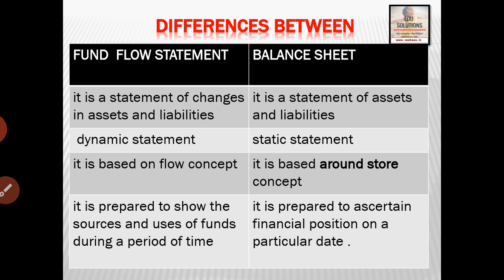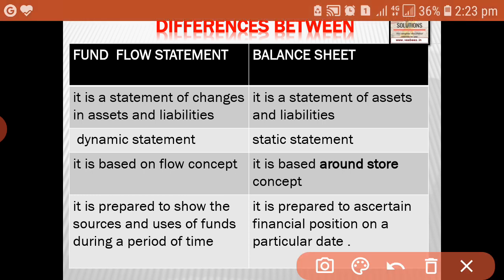Fund flow statement is a statement of changes in assets and liabilities. It shows increase in current assets, decrease in current assets, increase in current liability, decrease in current liability, and also changes in non-current items. So increases or decreases — changes in assets and liabilities — are identified in the fund flow statement.